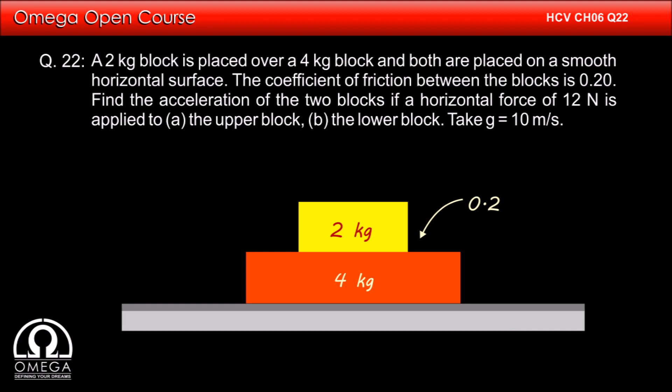A 2 kg block is placed over a 4 kg block and both are placed on a smooth horizontal surface. The coefficient of friction between the blocks is 0.2. Find the acceleration of the two blocks if a horizontal force of 12 N is applied to A, the upper block, or to the lower block.